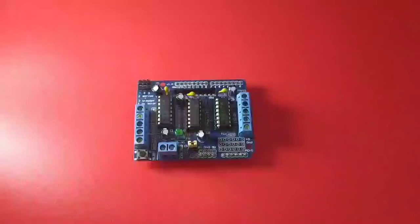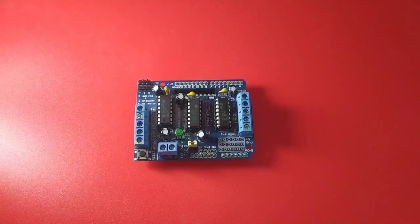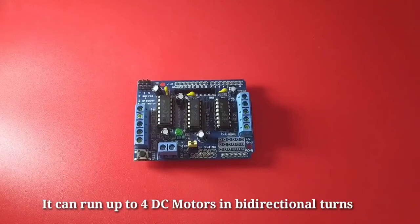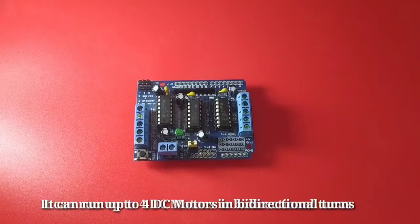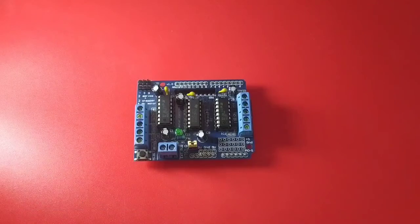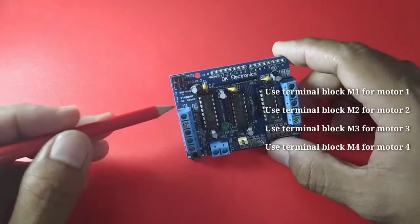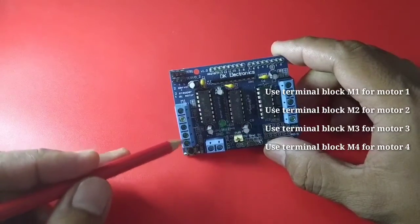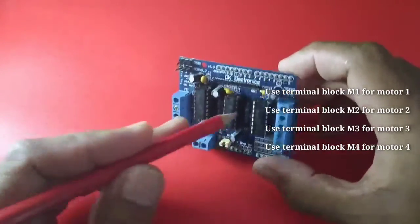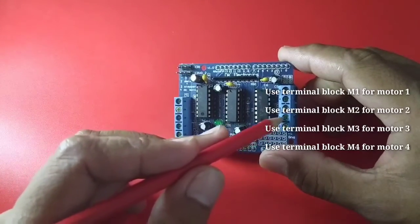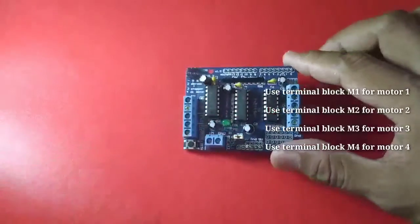The L293D Motor Driver Shield can be used to run 4 DC motors in bidirectional turns. This is by using the M1, this first one, M1, the M2 for the second motor, the M3 for the third motor, and the M4 for the fourth motor.